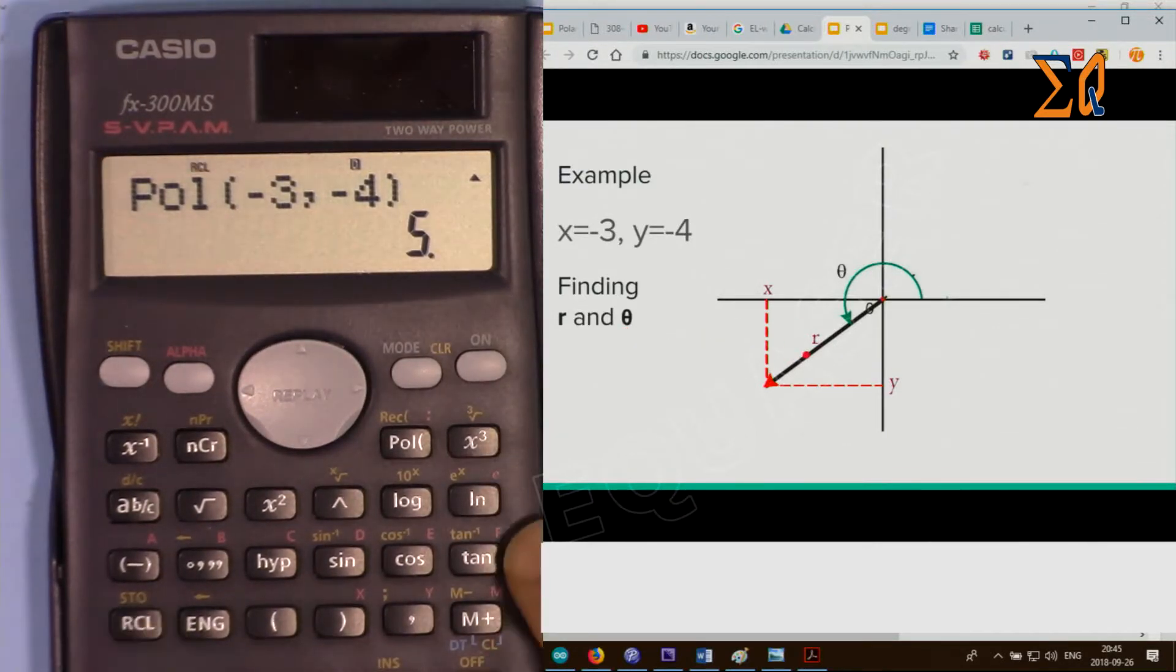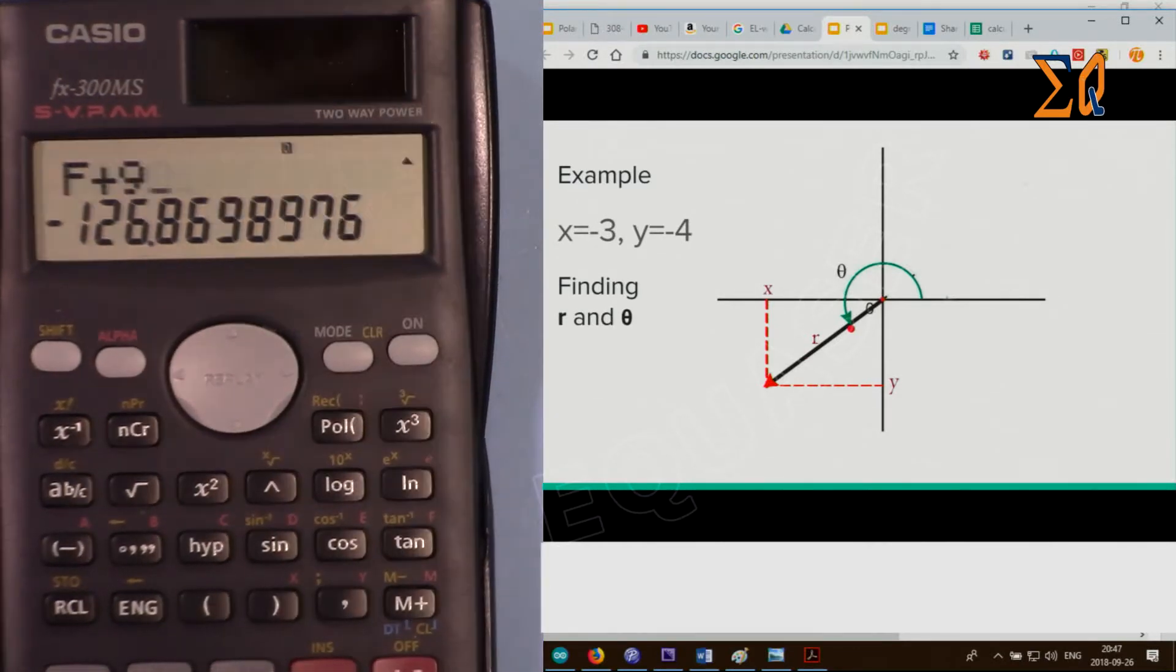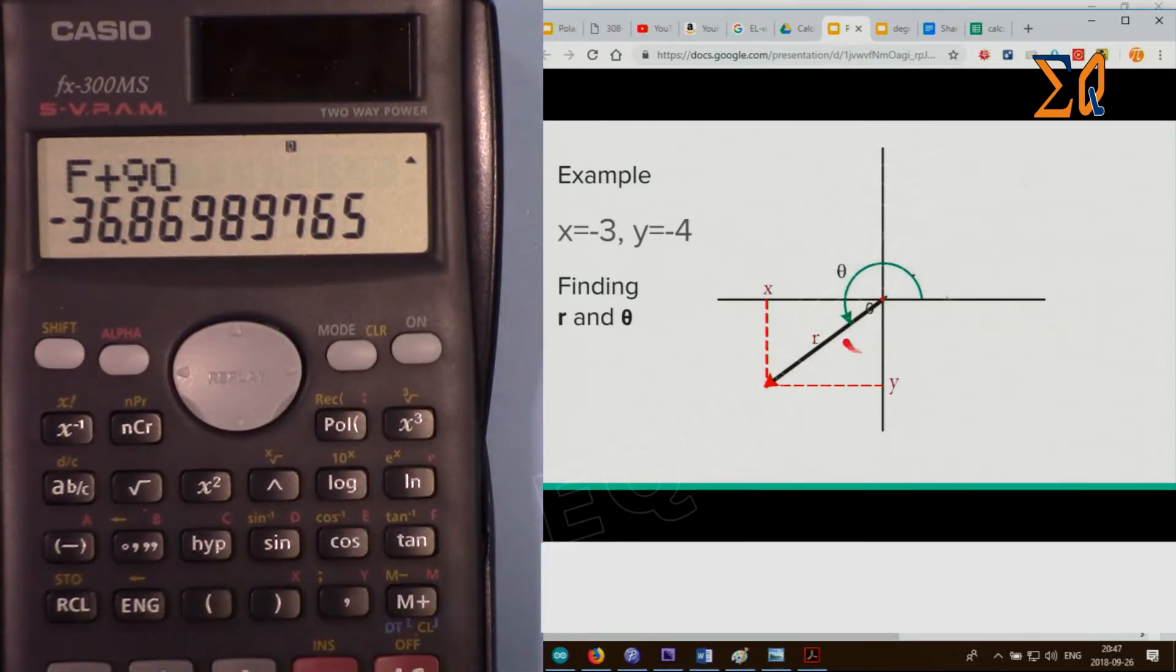By the way, if you are using 200 Plus, that's the value. Just press left arrow and then plus 90. That will give you minus 36, which means from here we have minus 36 degrees.